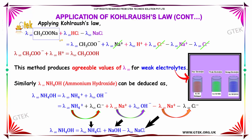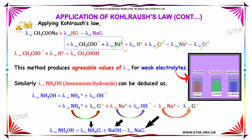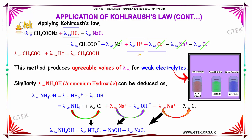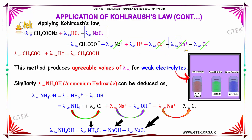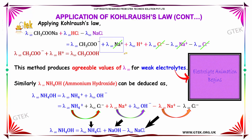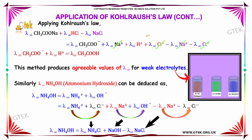For sodium acetate, CH₃COO⁻ and Na⁺ ions are indicated. This is the split-up of that term. For lambda infinity of hydrochloric acid, we have H⁺ and Cl⁻. After the split-up, we have plus lambda infinity of Na⁺ ions and minus lambda infinity of Na⁺ ions, so these plus and minus terms get cancelled. Similarly, plus lambda infinity of Cl⁻ and minus lambda infinity of Cl⁻ will also be cancelled.